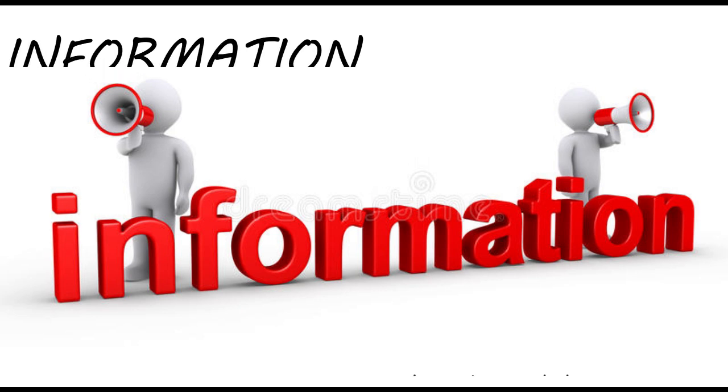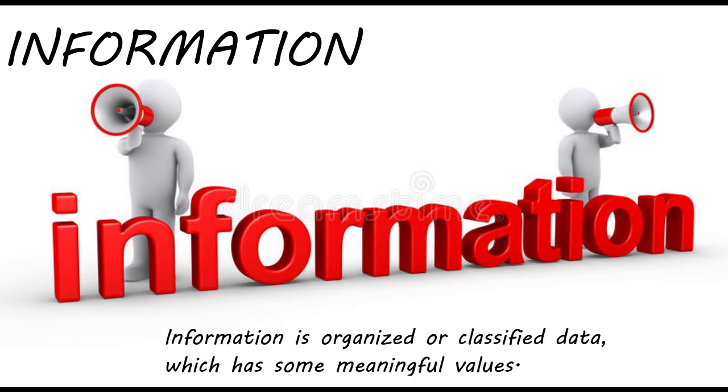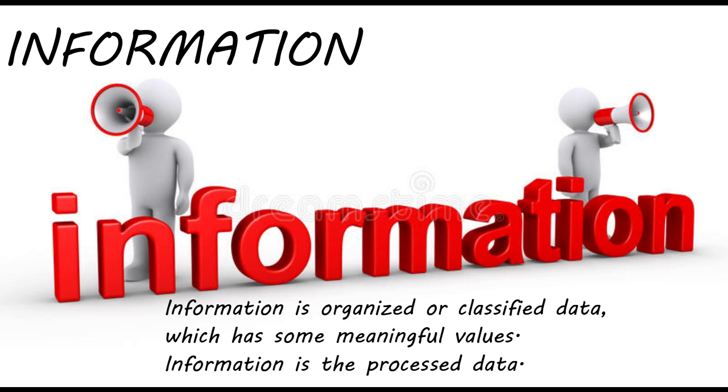Now, what is information? Information is the collection of organized data. Information is organized or classified data which has some meaningful value. Information is processed data. For example, the combination of letters like 'apple' or 'ball' carry information that is very familiar to us. This is information.